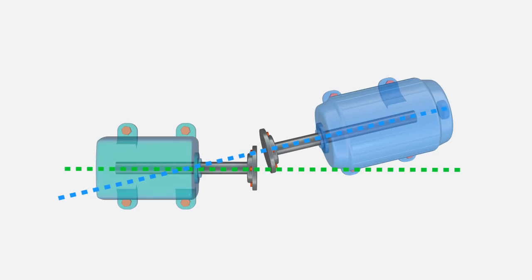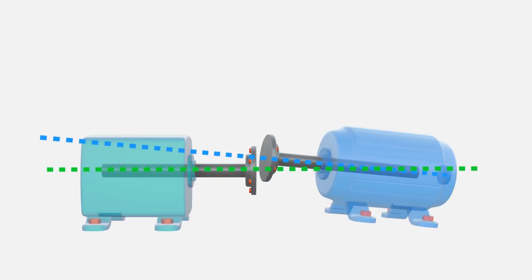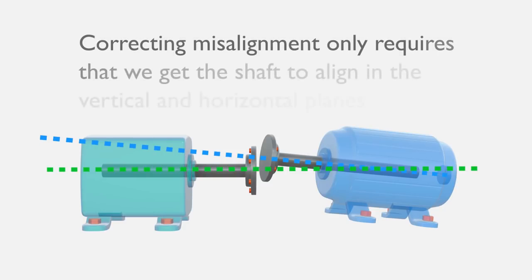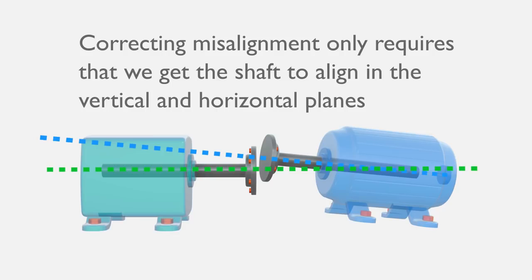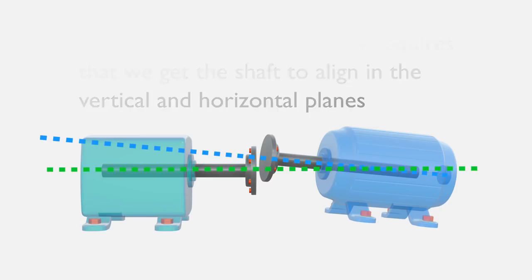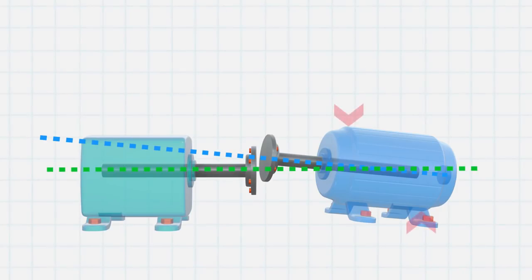While it is much easier to understand misalignment if you can visualize it in three-dimensional space, correcting misalignment only requires that we get the shafts to align in the vertical plane and in the horizontal plane. Fortunately, we are able to adjust the relative position of the two shafts in these two dimensions.